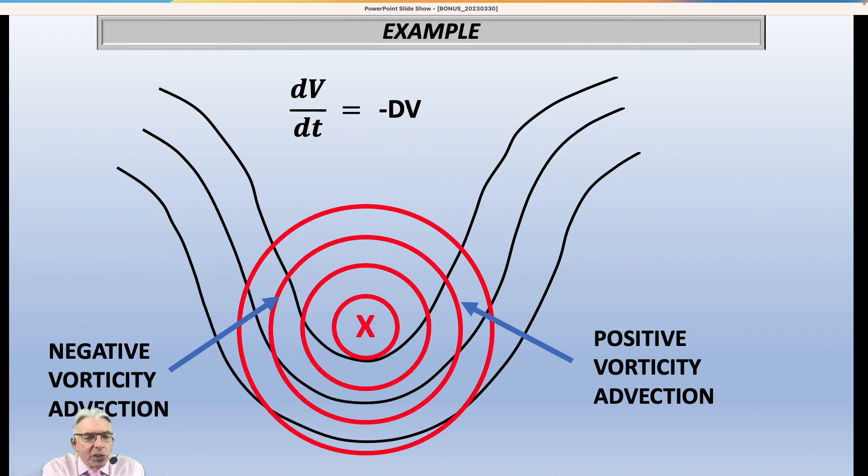Now, there's another equation I have to bring up here, and that is the change in vorticity with time is equal to the product of the divergence times the vorticity with a minus sign in front of it.